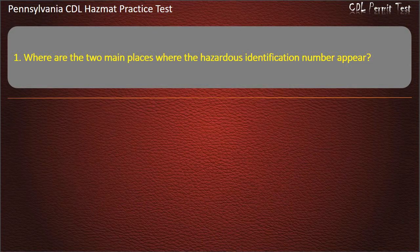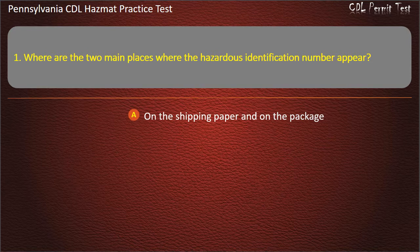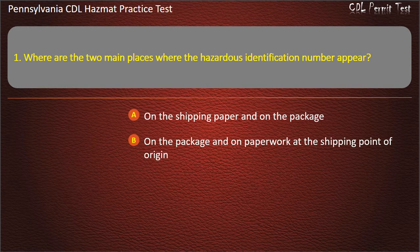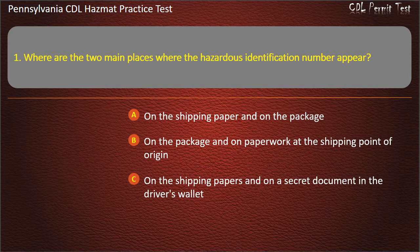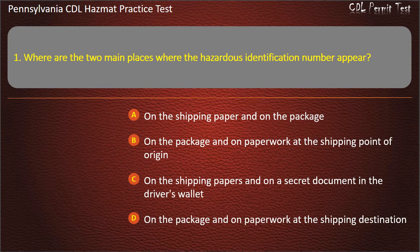Question 1. Where are the two main places where the hazardous identification number appear? Options: On the shipping paper and on the package; On the package and on paperwork at the shipping point of origin; On the shipping papers and on a secret document in the driver's wallet; On the package and on paperwork at the shipping destination. Answer: On the shipping paper and on the package.